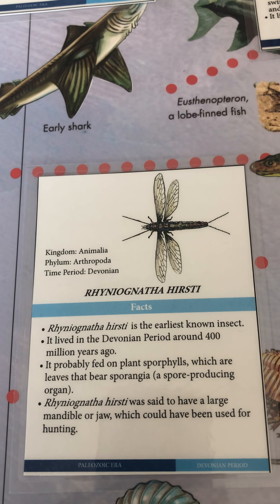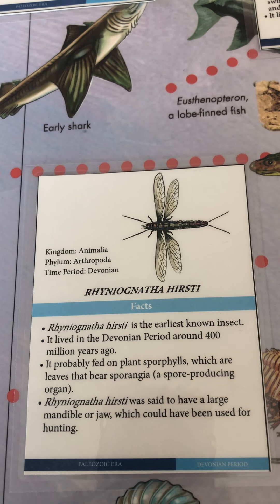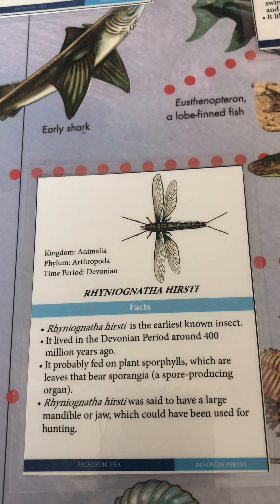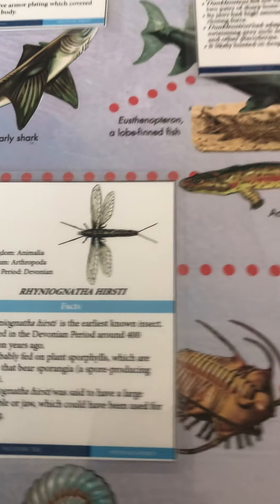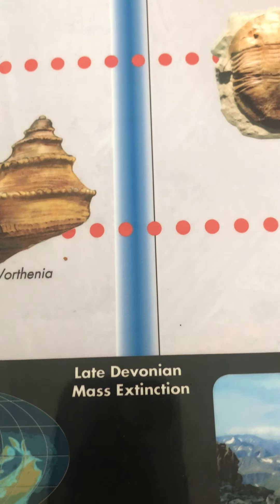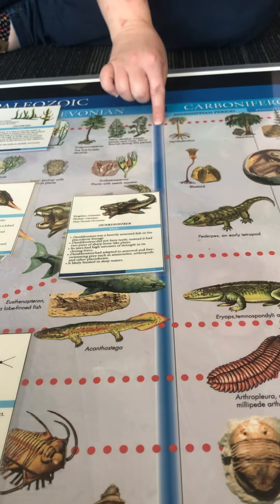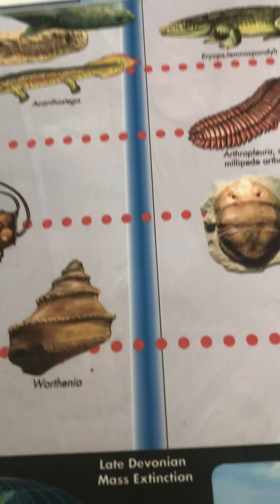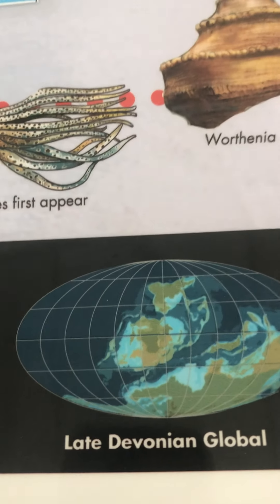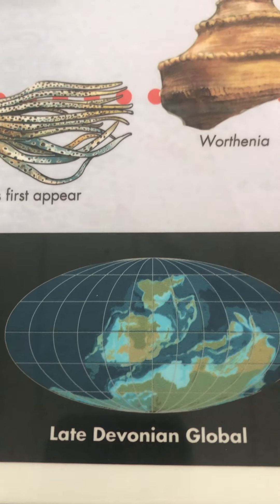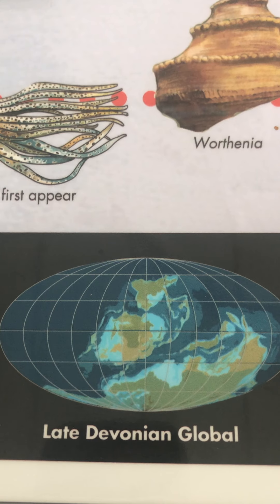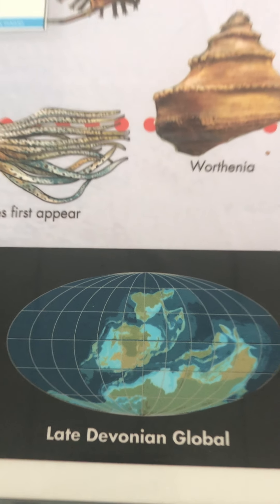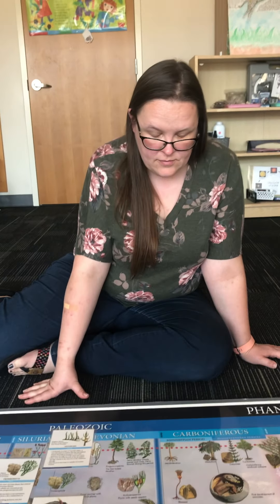So that's the Devonian period. At the end of the Devonian period there was another mass extinction — whenever we see these big blue lines, that means there was a mass extinction where a lot of animals and plants went extinct. We'll talk about that more in our next video.